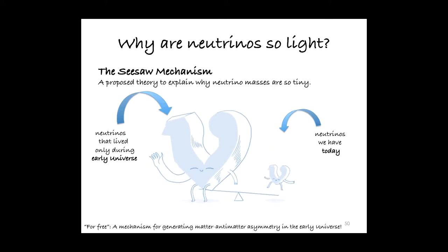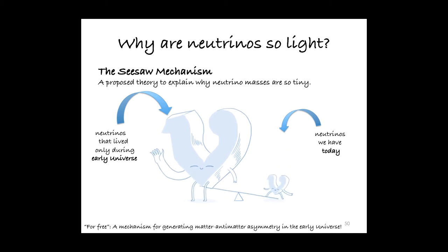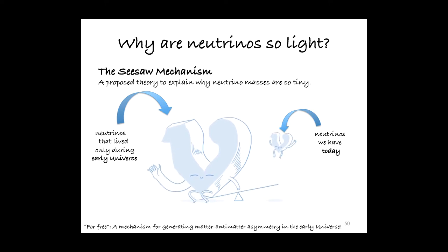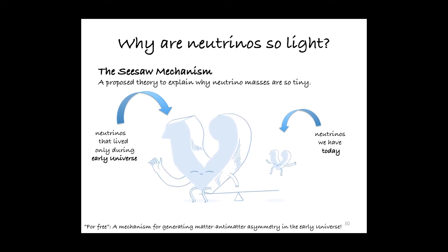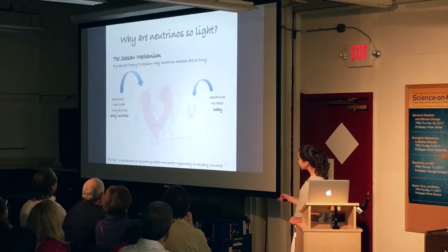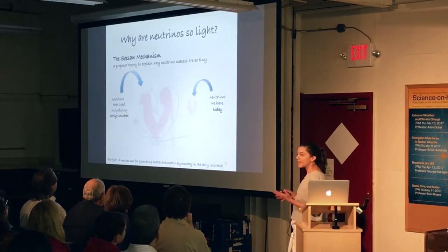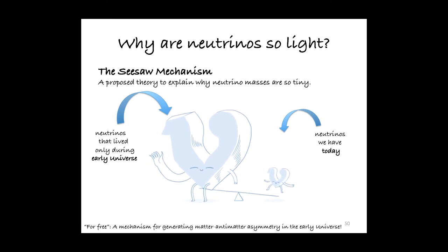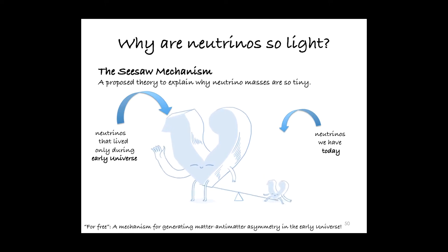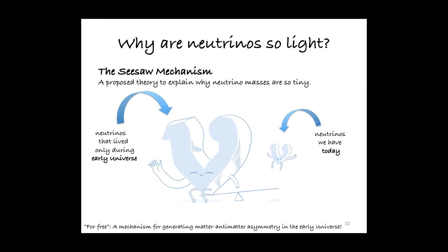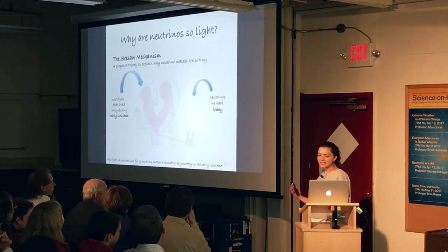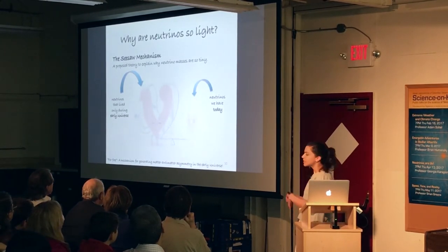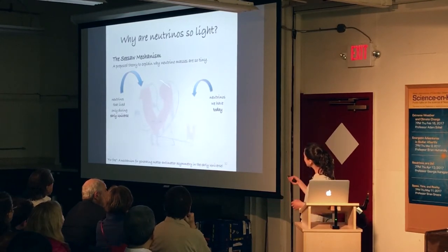We actually think that neutrinos may get their masses through another mechanism, called the seesaw mechanism. What the seesaw mechanism predicts is that the light neutrinos we know and study experimentally today have very massive, heavy superpartners. The seesaw itself is kind of like a ratio: the heavier the mass of this superpartner, the lighter the mass of the light neutrino. So something led to these neutrinos, while originally having masses more consistent with the other Standard Model particles, developing this asymmetry.